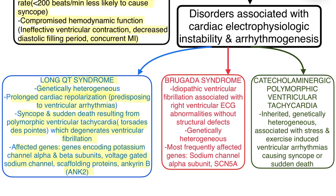The second syndrome is Brugada syndrome, which is idiopathic ventricular fibrillation associated with right ventricular electrocardiographic abnormalities without structural defects. It is also genetically heterogeneous, and the most frequently affected gene is the sodium channel alpha subunit SCN5A. The third syndrome is catecholaminergic polymorphic ventricular tachycardia, which is also genetically heterogeneous and inherited.